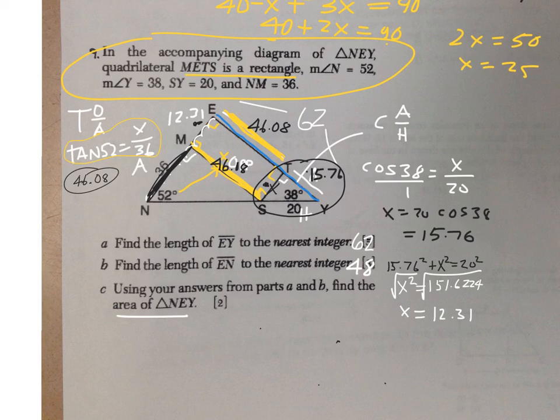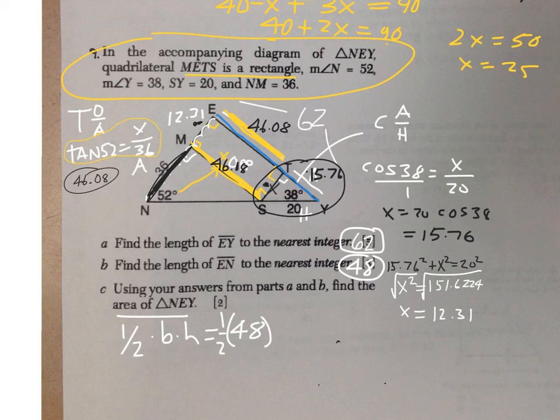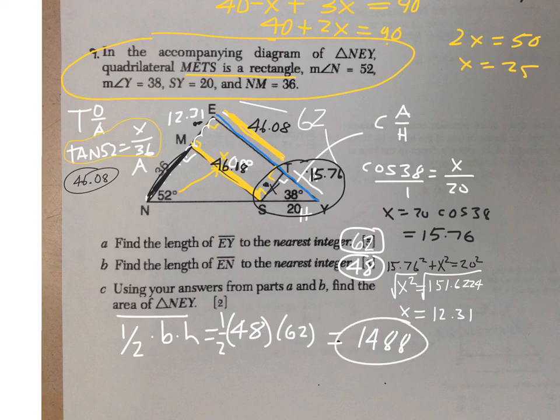It says find the area of triangle NEY. We'll have to use the area formula half base times height. Those are my first two answers, and then half base times height. Well the base of triangle NEY could be EN which is my first answer, 48. So one half of 48 times the height which would be the other side 62. Yeah so it's one half of my two answers multiplied together from the first two parts, which brings me to 1488 for the area. Yes and yes. Thank you.